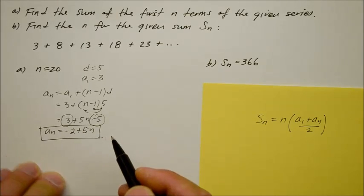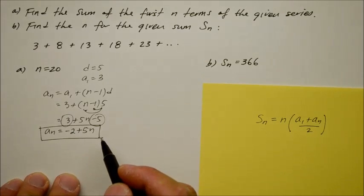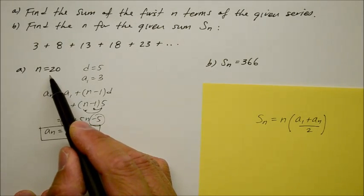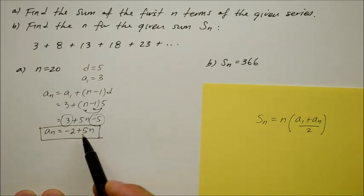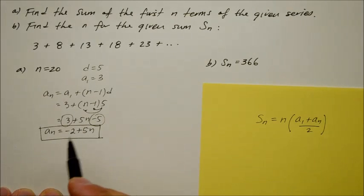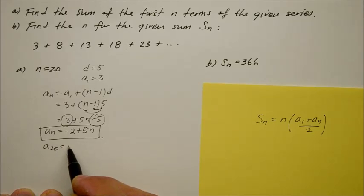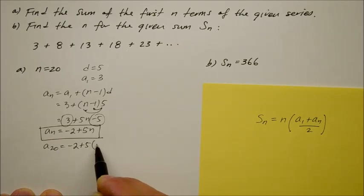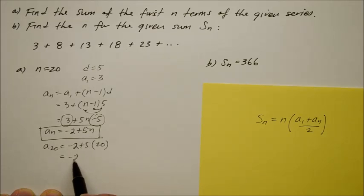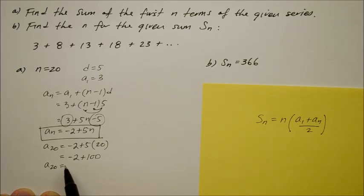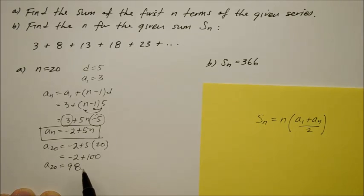The question is then: what is the 20th number in this sequence? So a sub 20 is equal to negative 2 plus 5 times 20. That's negative 2 plus 100, so the 20th number of this sequence is 98.